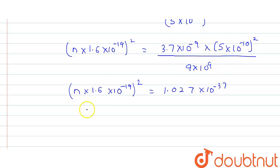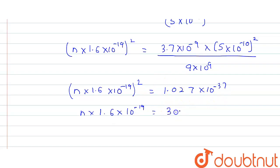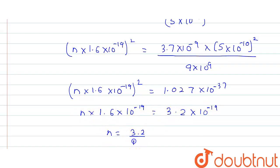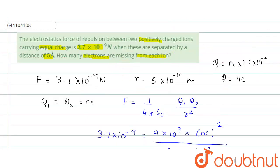So (n × 1.6 × 10⁻¹⁹)² = 1.027 × 10⁻³⁷. Taking the square root of both sides gives n × 1.6 × 10⁻¹⁹ ≈ 3.2 × 10⁻¹⁹. The 10⁻¹⁹ cancels, so n = 3.2 / 1.6 = 2.